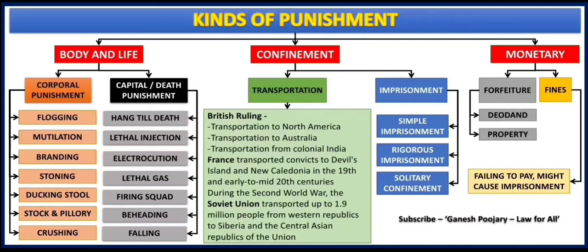Under body and life, the first type — corporal punishment — includes flogging, mutilation, branding, stoning, ducking stool, stock and pillory, and crushing. Most of these terms are new, and I will explain them in the next slide. Under capital and death punishment, there are many ways to implement it: hang till death, lethal injection, electrocution, lethal gas, firing squad, beheading, and falling. I am going to discuss all of these body and life related punishments in my immediate slide.